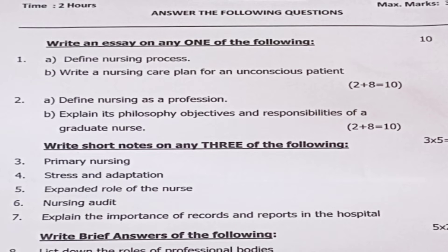Second question: 2A — Define nursing as a profession, 2 marks. 2B — Explain its philosophy, objectives, and responsibilities of a graduate nurse, 8 marks. Total: 2 plus 8 equals 10 marks.